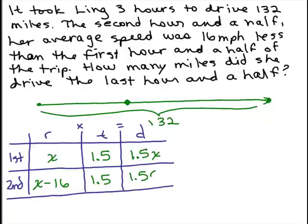Which can be simplified by distributing the 1.5. So we have 1.5 times x minus 1.5 times 16. So we're not quite done. Let's simplify that just a little bit more. What is 1.5 times 16?